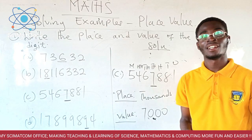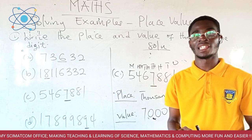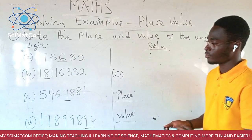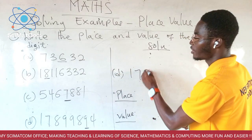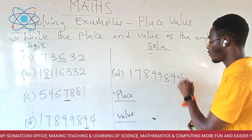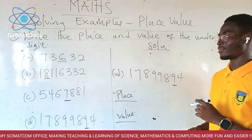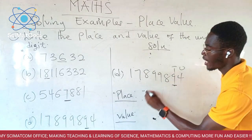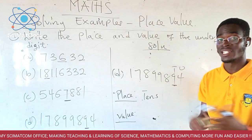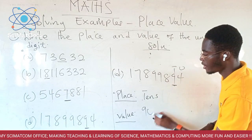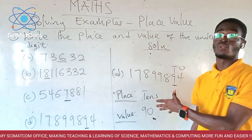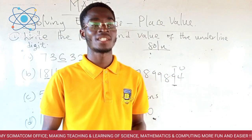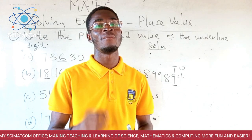Now for the last example — D. The number is 7, 8, 9, 5, 8, 9, 4 and the nine is underlined. So the place of nine is tens. And the value is ninety — you write nine and one zero. All right, so right after this, go to the end of the video, do the assessment, show it to your teacher, show it to your mother, your father, and let them mark it for you.